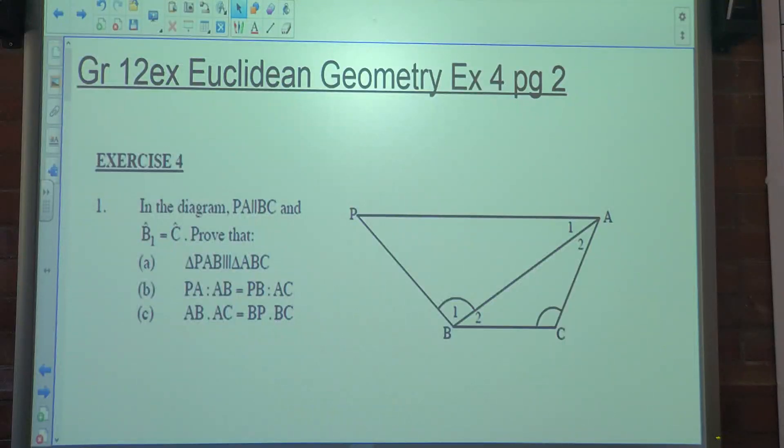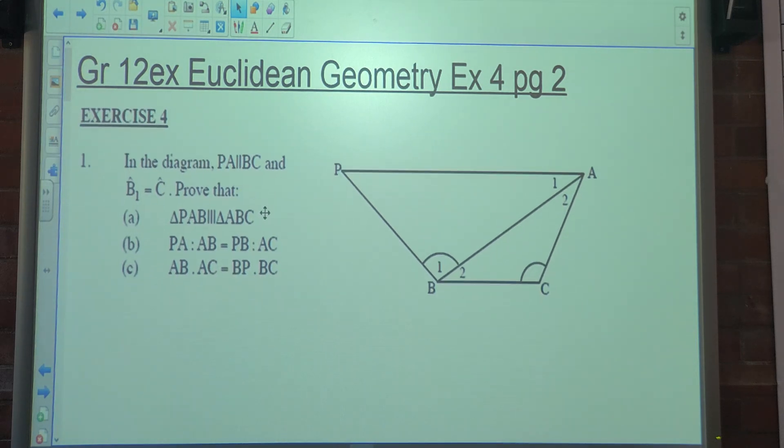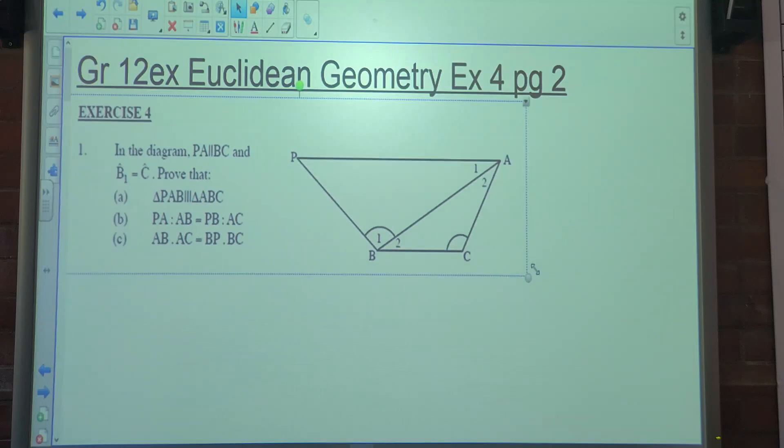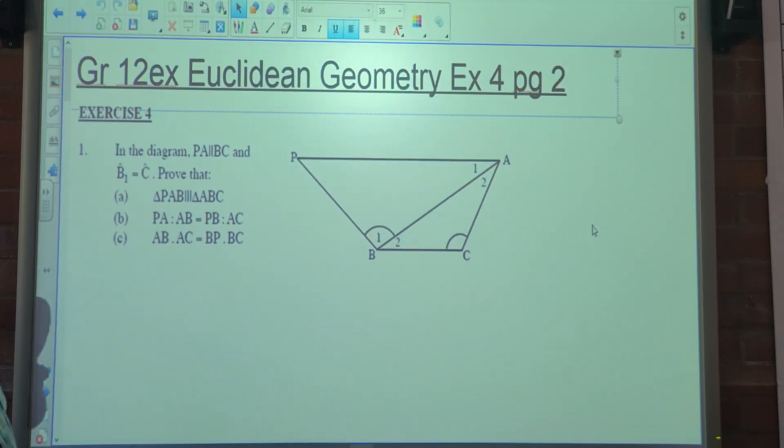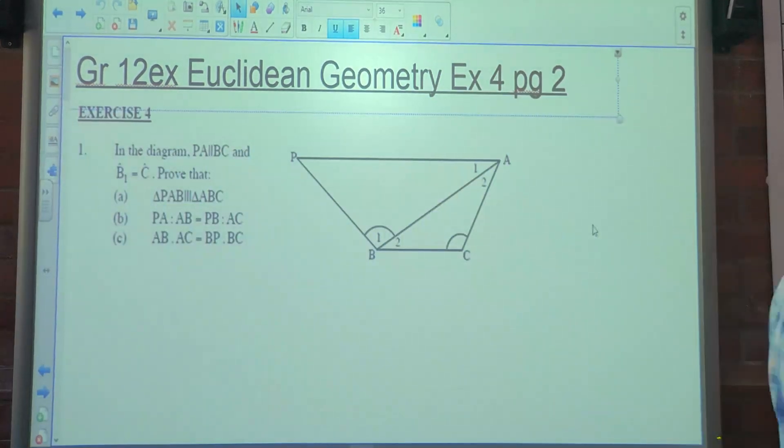Okay, so today we're looking at Euclidean geometry and we're looking at exercise 4. This is on page 263.